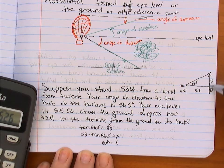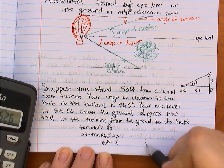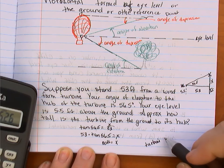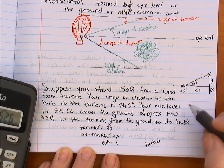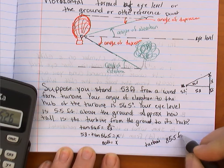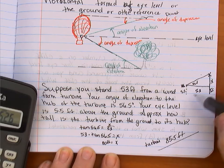However, that's only this distance, so the turbine is 80 feet plus the 5 feet 5 inches. So it's going to be 85.5 feet. Because you have to add your height.